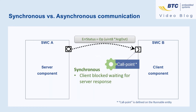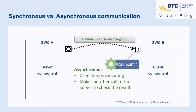Moreover, an operation call can be synchronous or asynchronous, and this can be defined with an attribute on the client communication. In a synchronous communication, the client is blocked and waits for the server to respond, while in an asynchronous communication, the client can continue its execution but would need to be triggered again once the server response is ready.